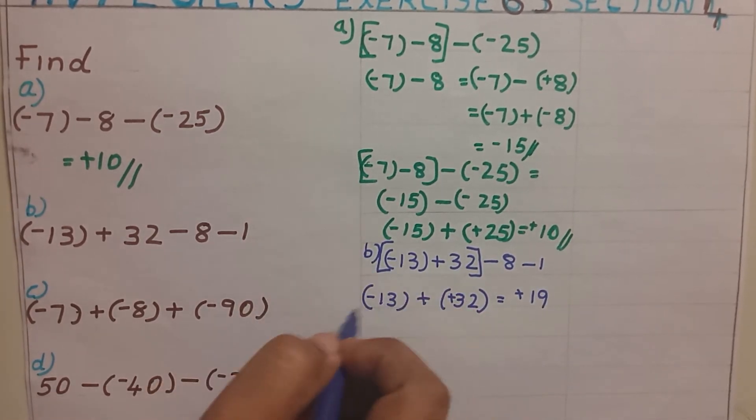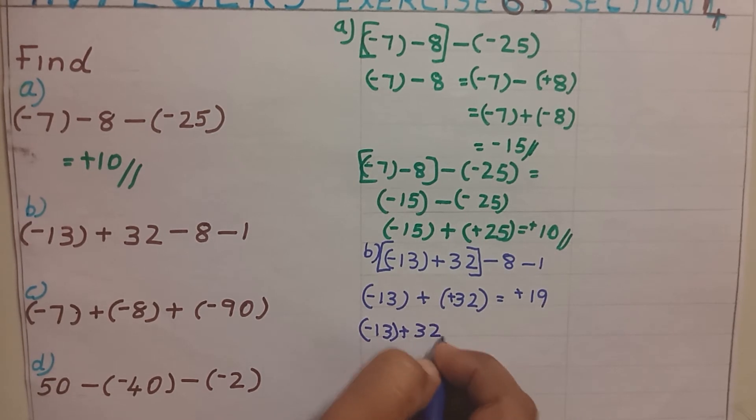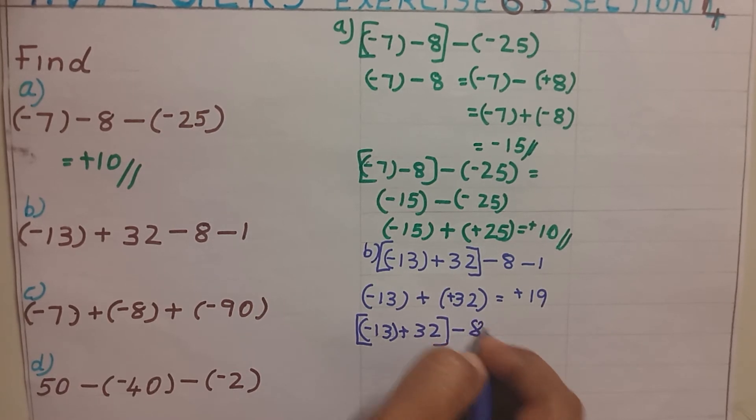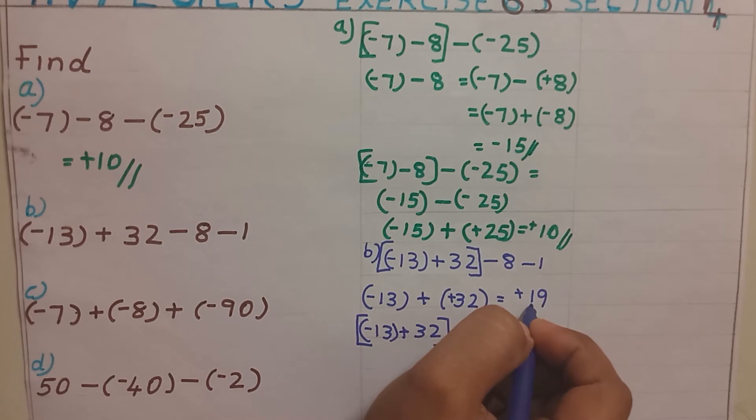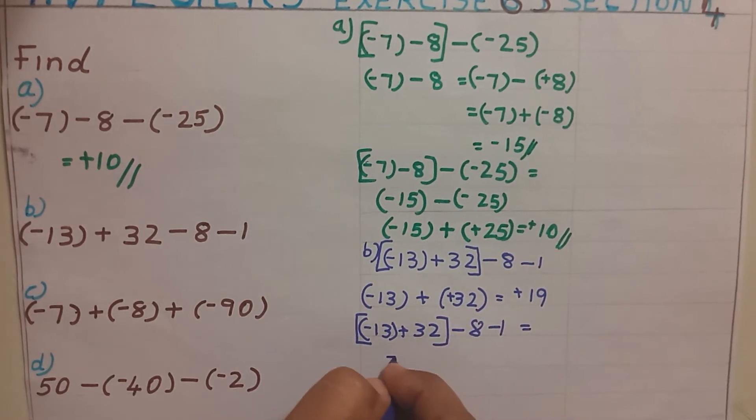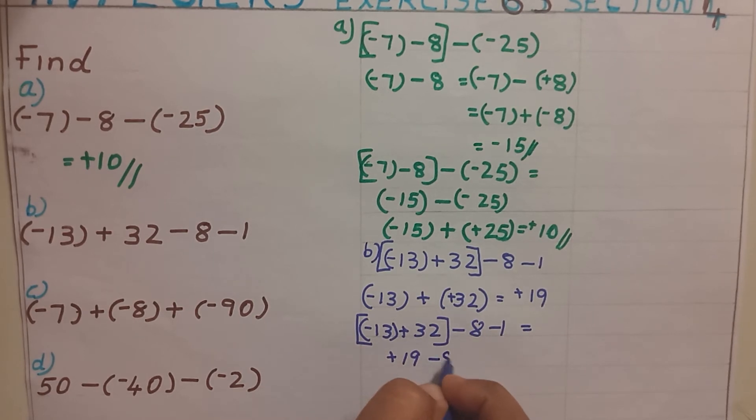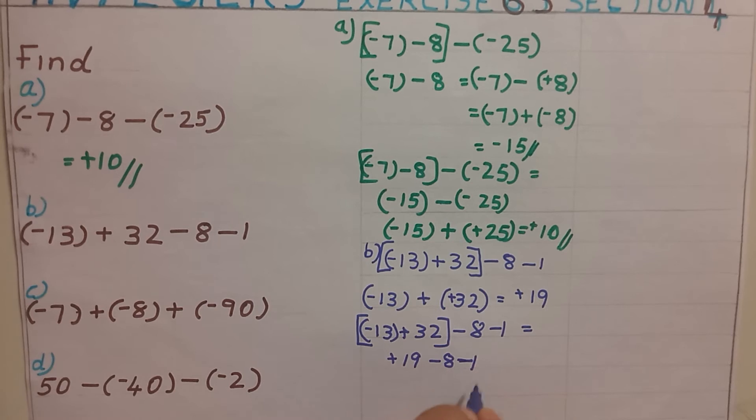So our question will change like this: minus 13 plus 32 minus 8 minus 1 equal to, instead of this bracket I can give the value positive 19 minus 8 minus 1. What all numbers are remaining? I am taking all the numbers in the next step two.